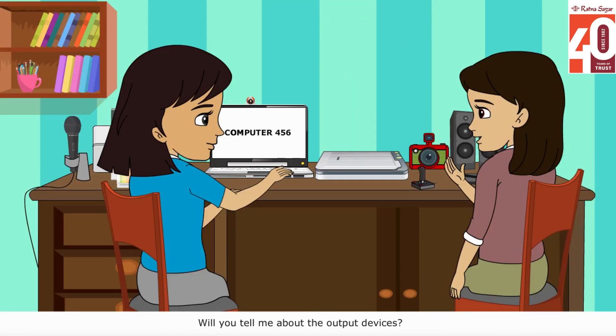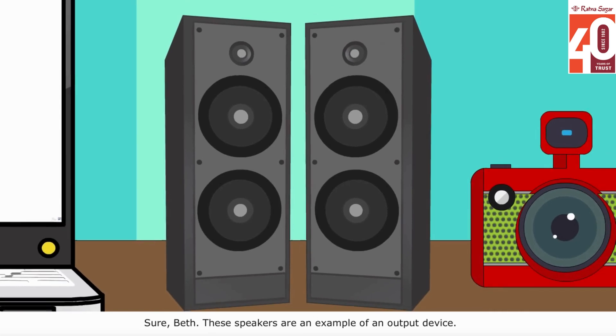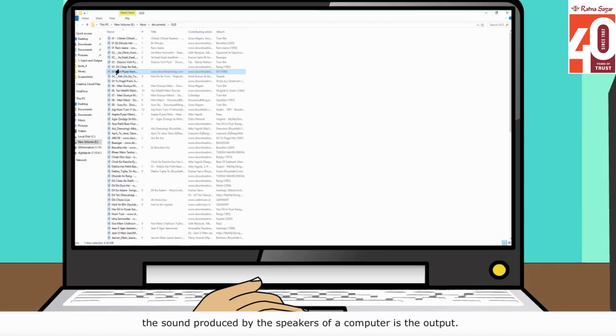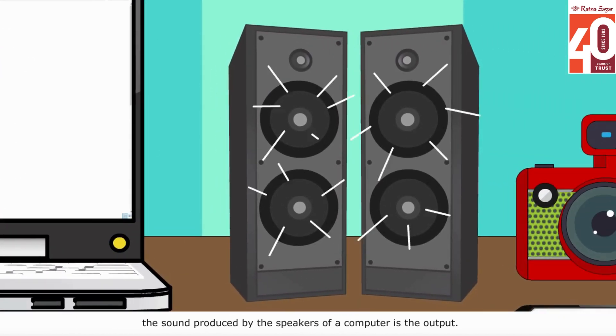Will you tell me about the output devices? Sure, Beth. These speakers are an example of an output device. When you select a sound on the computer as input, the sound produced by the speakers is the output.